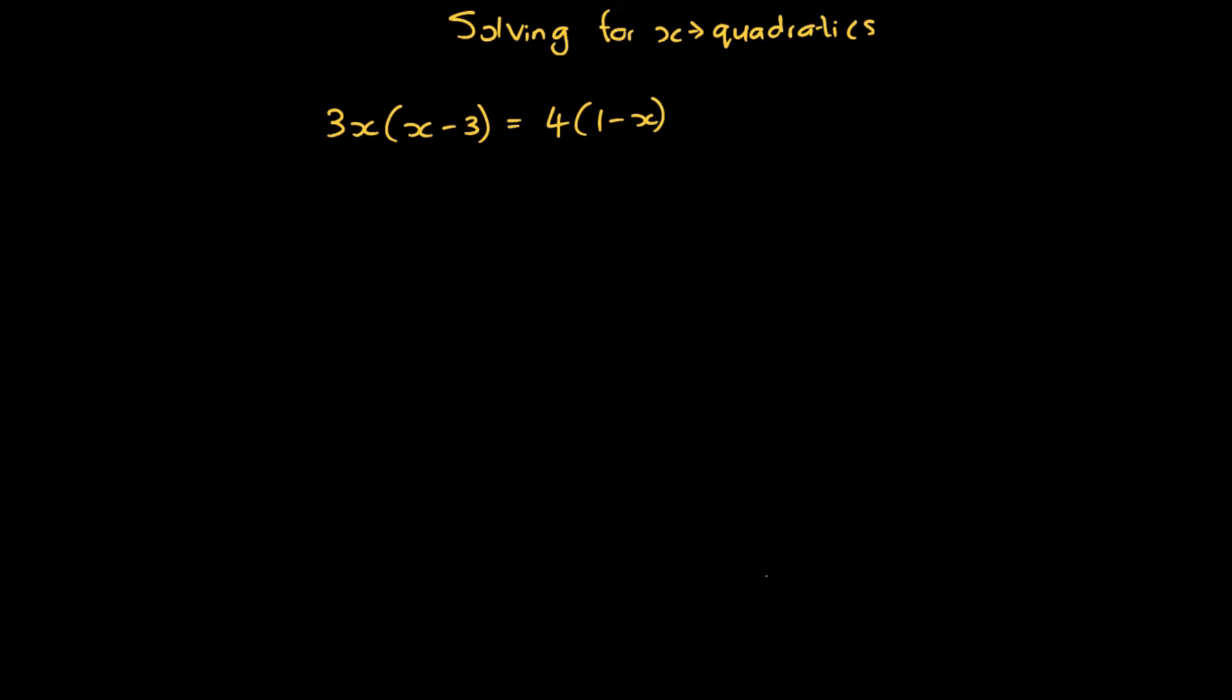The first step is going to involve us multiplying the variables in front of the brackets into the brackets. So 3x times x gives us 3x squared. 3x multiplied by negative 3 gives us minus 9x equals 4 times 1 is 4 minus 4x.